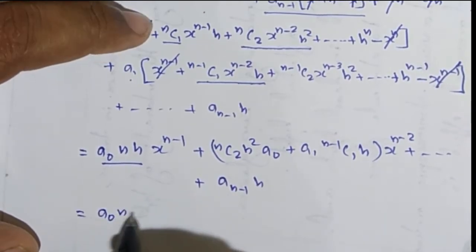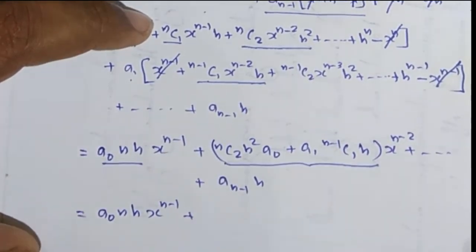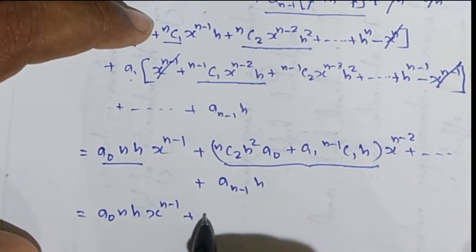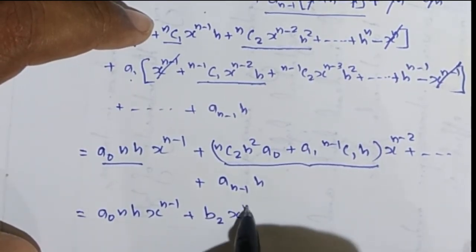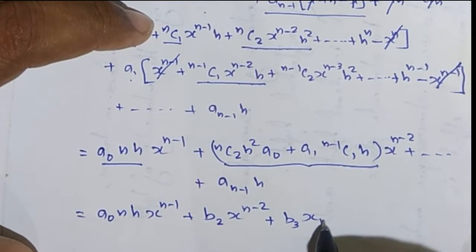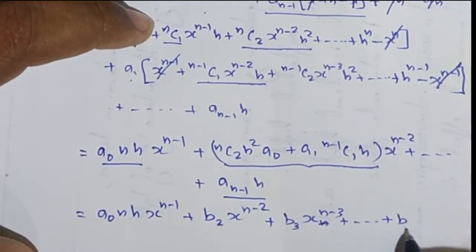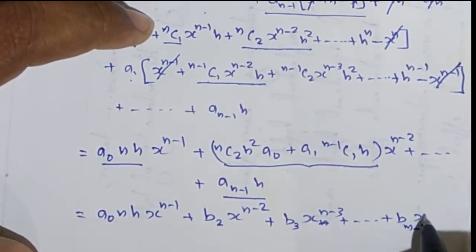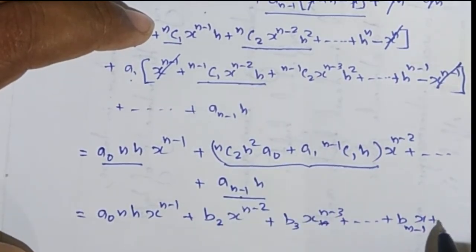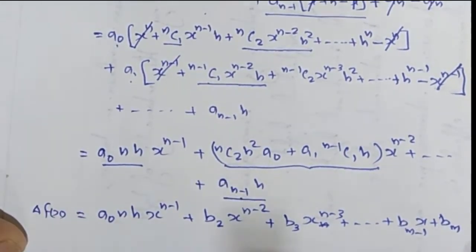So Δf(x) = a0·n·h · x^(n-1) + b2 x^(n-2) + b3 x^(n-3) + ... + b(m-1) x + bm. This is the first forward difference of the polynomial, and we see that the first forward difference is a polynomial of degree n-1.